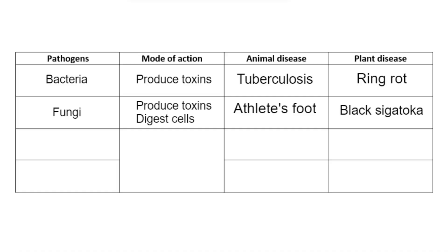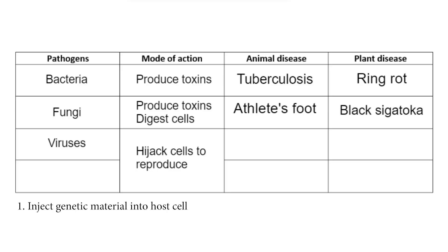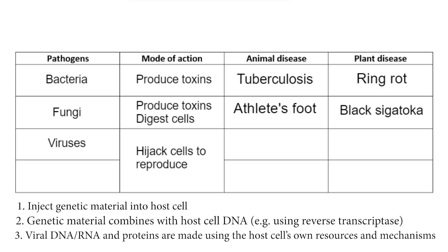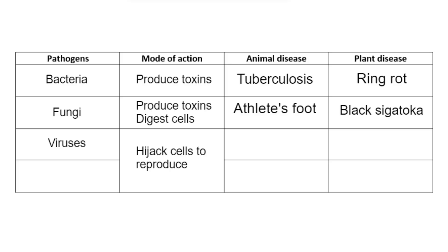The third pathogen we're going to talk about are viruses. The main way that viruses cause illness is that they take over cells and use the cell's own resources to reproduce. The virus injects its own DNA or RNA into the cell, which embeds itself with the cell's own DNA. As the cell goes through DNA replication or protein synthesis, it starts making more viral DNA or viral proteins, and the virus assembles itself within our cells. Once enough viruses are made, the cell bursts from inside out, causing cell damage.